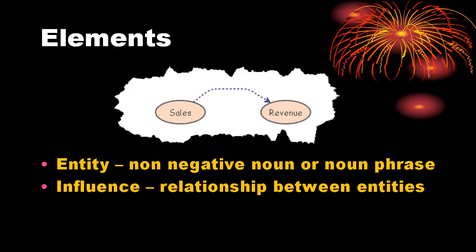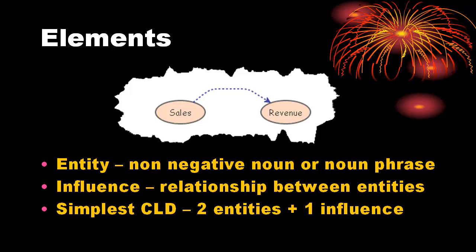Influences indicate the relationships between two entities. As we have seen shortly, there are two different types of influences possible. The implication is that the simplest causal loop diagram requires two entities and one influence, though that is not actually a loop, is it? A loop takes two entities and two influences.